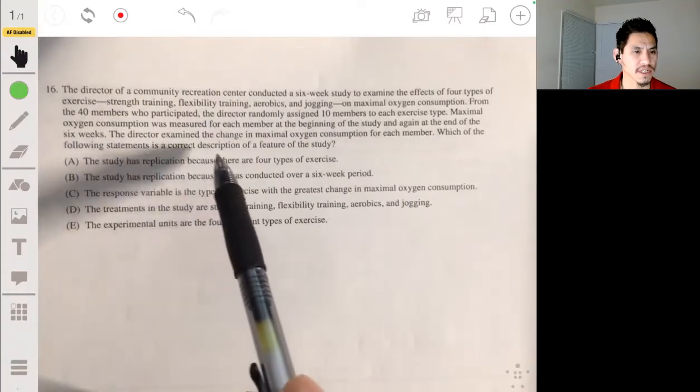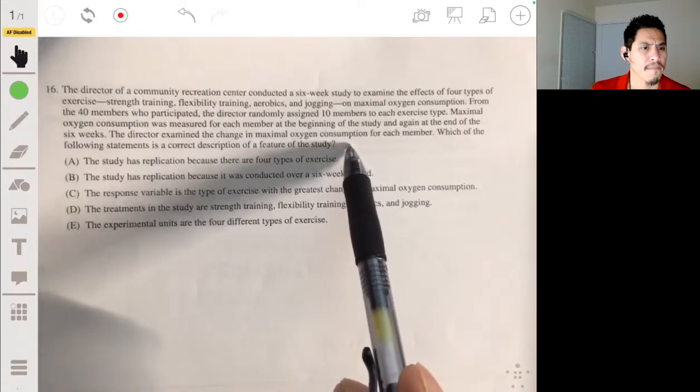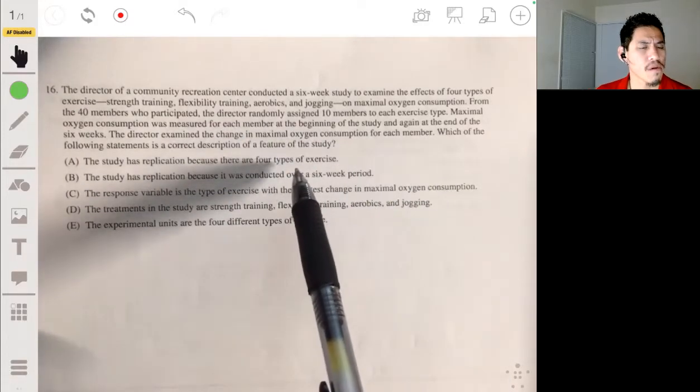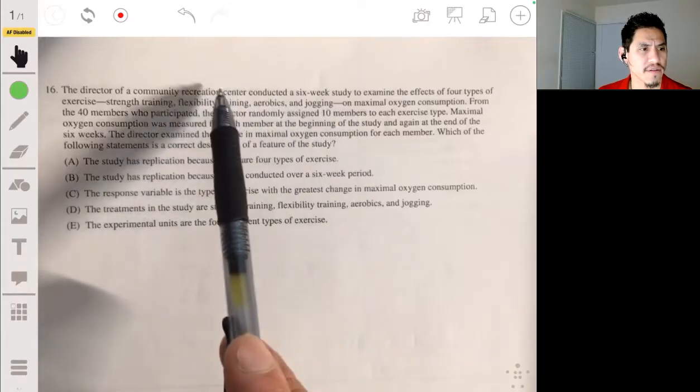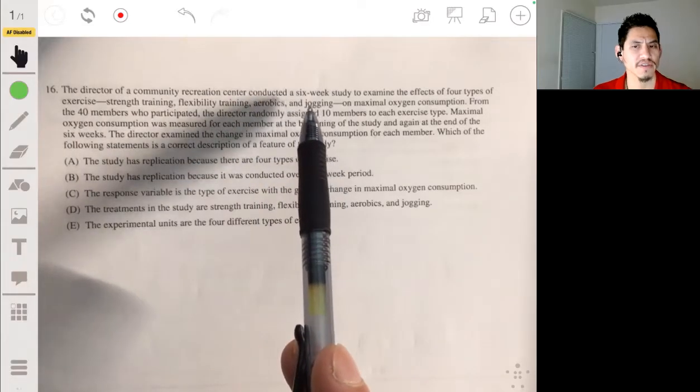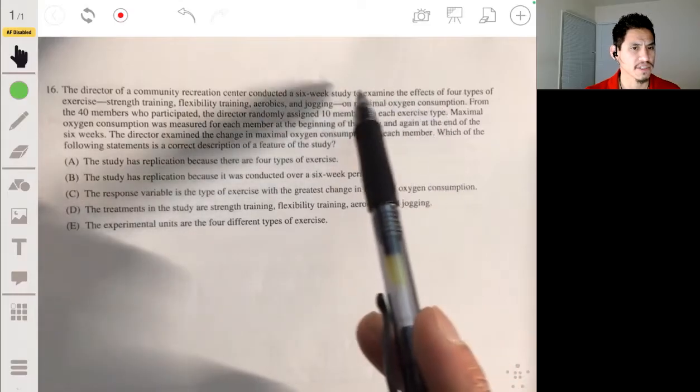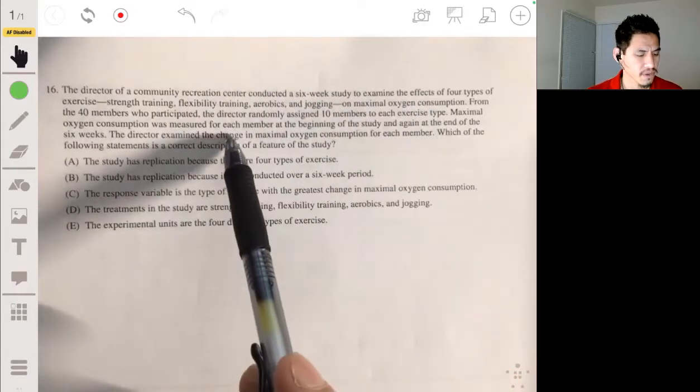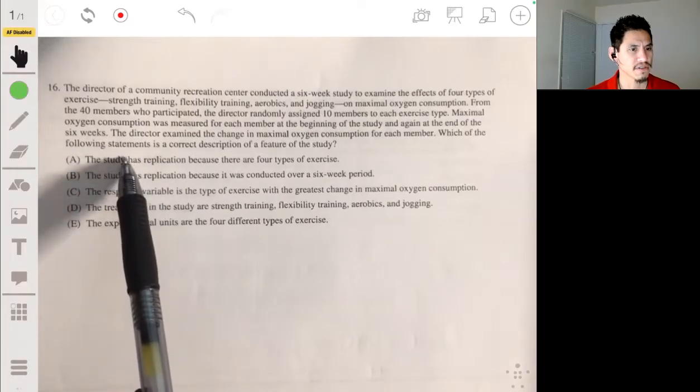Which of the following statements is a correct description of a feature of the study? Okay, so this is an experiment. They're testing, they have four treatments they're testing: one, two, three, four, and they want to see its effects on maximal oxygen consumption. So this is a response variable. So let's see which of these would be correct.